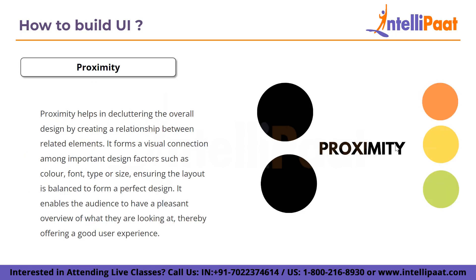The next component is proximity. Proximity helps declutter the overall design by creating a relationship between related elements. It forms a visual connection among important design factors such as color, font type, or size, ensuring the layout is balanced. Proximity is one of the most crucial grouping concepts and can outweigh other visual cues like similar color or shape. In UI design, relevant components are grouped together while unrelated elements are separated. When creating flexible layouts, paying attention to the closeness of items is especially crucial because groups may alter as they adjust to different screen sizes.